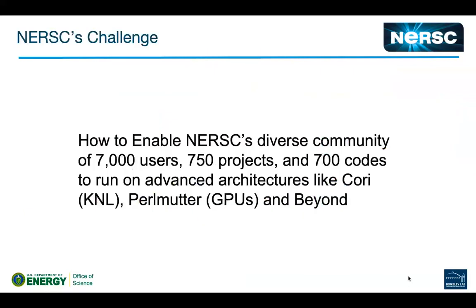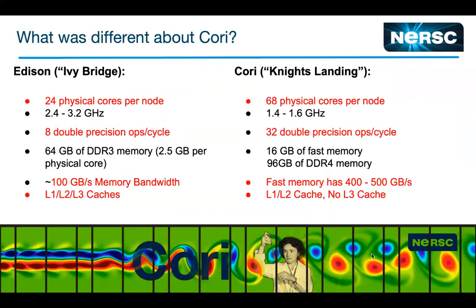The challenge for NERSC has been enabling its diverse community of 7,000 users and 750 codes to run productively on advanced architectures like Cori, a KNL architecture, and then Perlmutter with GPUs and beyond. This is a challenge many facilities face, but as the HPC community moves toward exascale, NERSC wants to ensure the scientific community doesn't get left behind.